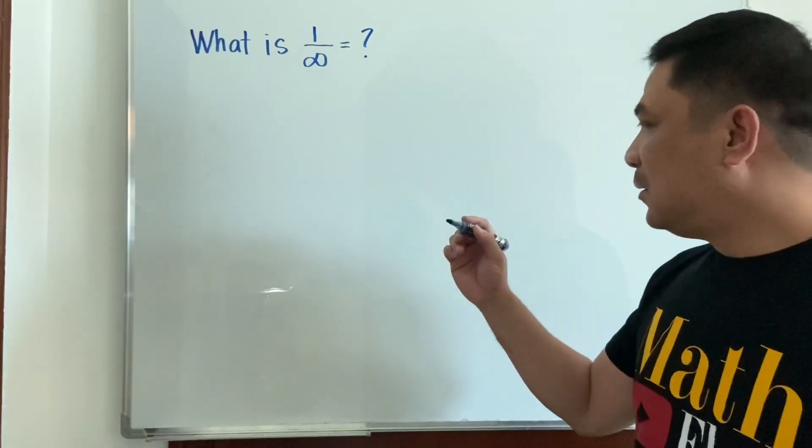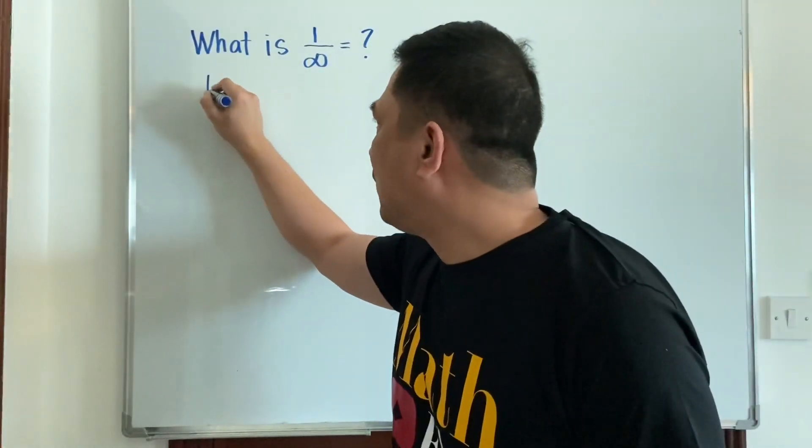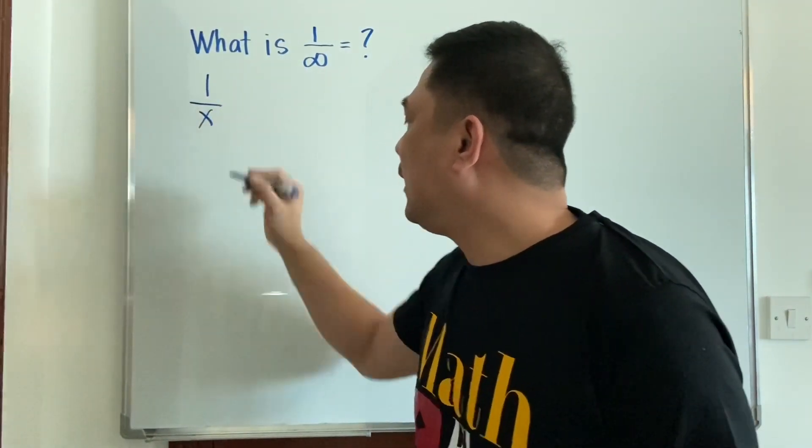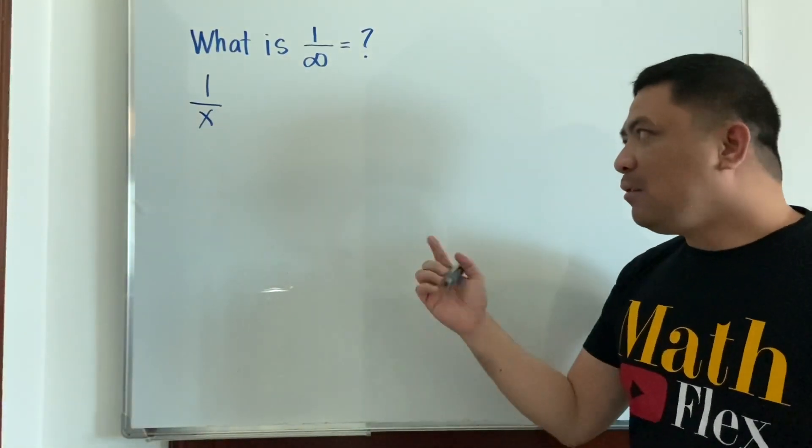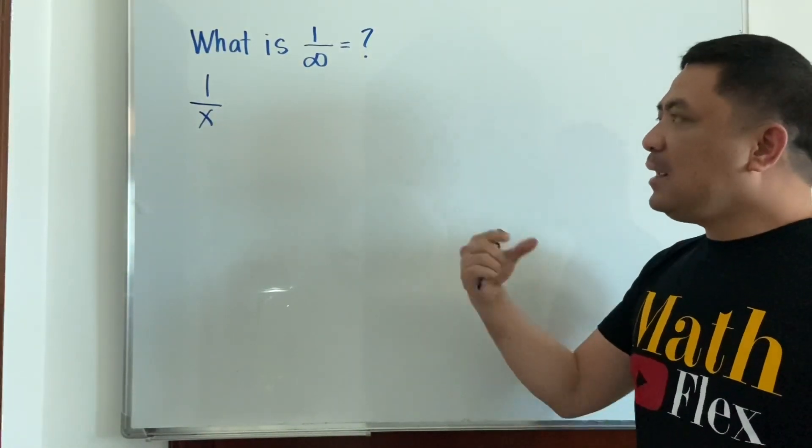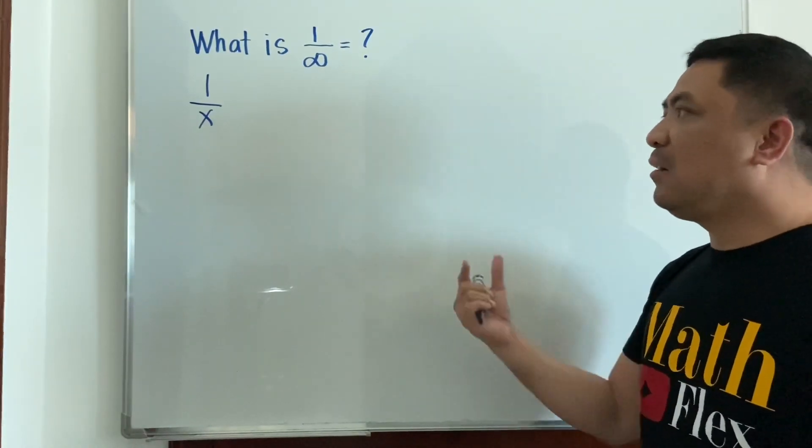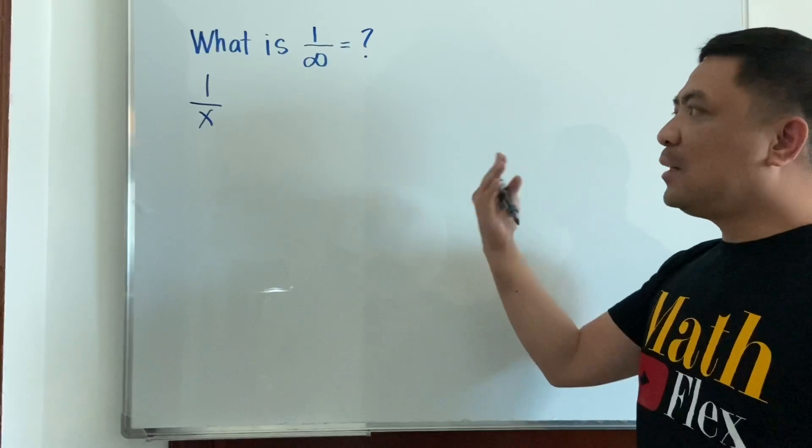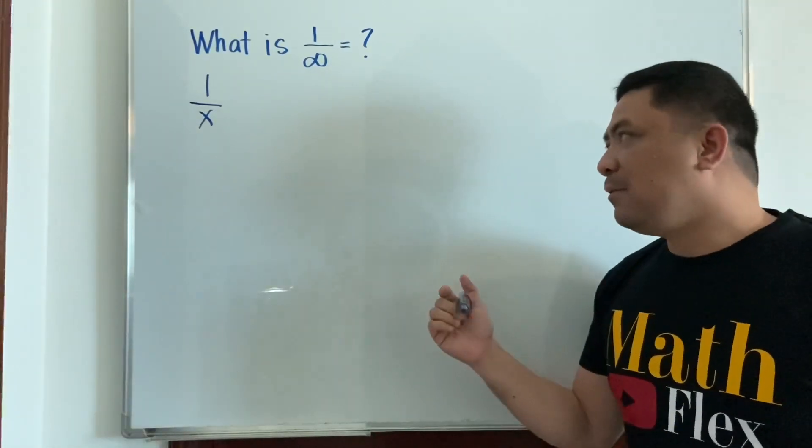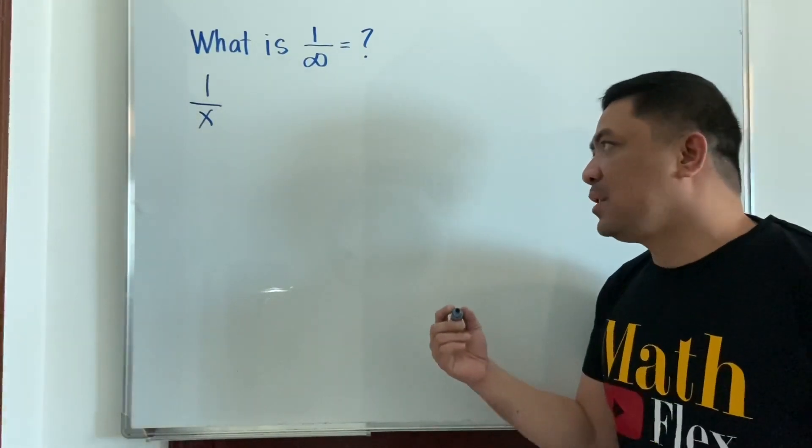Let's try to have 1/x. If you have 1/x, we'll try to increase it. Since infinity is the largest number, or greater than the largest number you can think of, let's gradually increase the value of x and see what will happen to the quotient or to the answer.